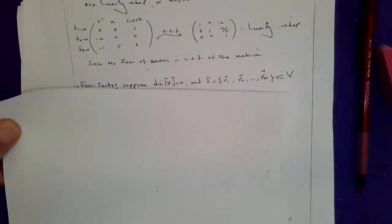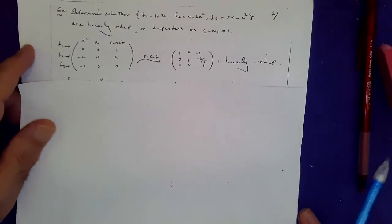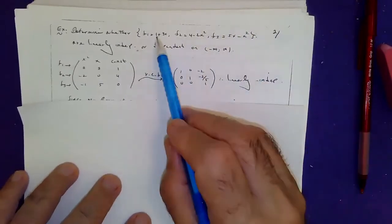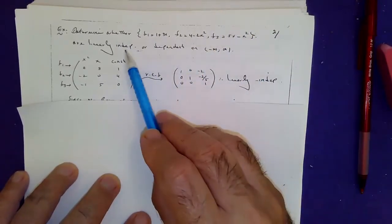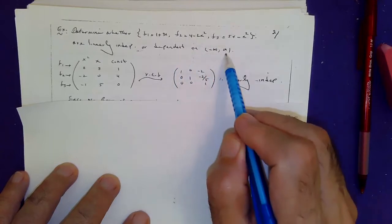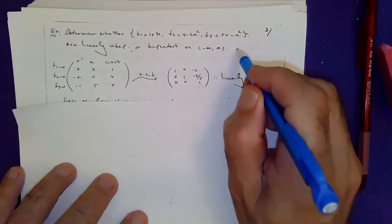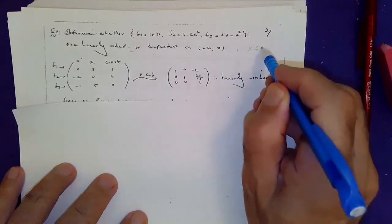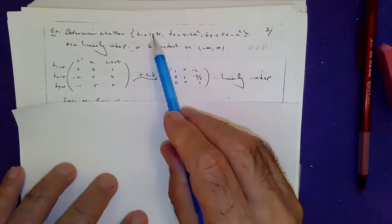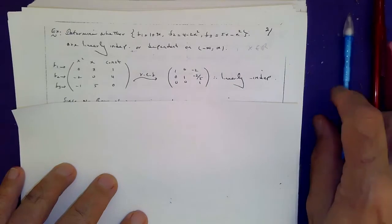The beauty of forming the matrix is also you can do it with polynomials. Check this out. Are these three functions linearly dependent or independent on the interval between negative infinity to infinity? Meaning, if x is any real number, could you somehow determine if these three functions are linearly dependent or independent?